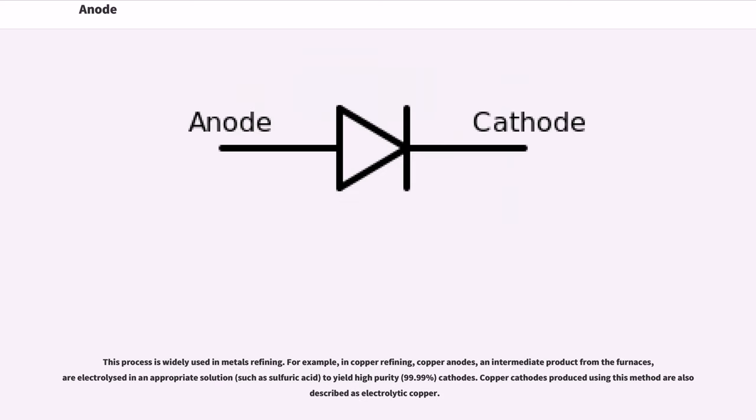This process is widely used in metals refining. For example, in copper refining, copper anodes (an intermediate product from the furnaces) are electrolyzed in an appropriate solution, such as sulfuric acid, to yield high purity (99.99%) cathodes. Copper cathodes produced using this method are also described as electrolytic copper.